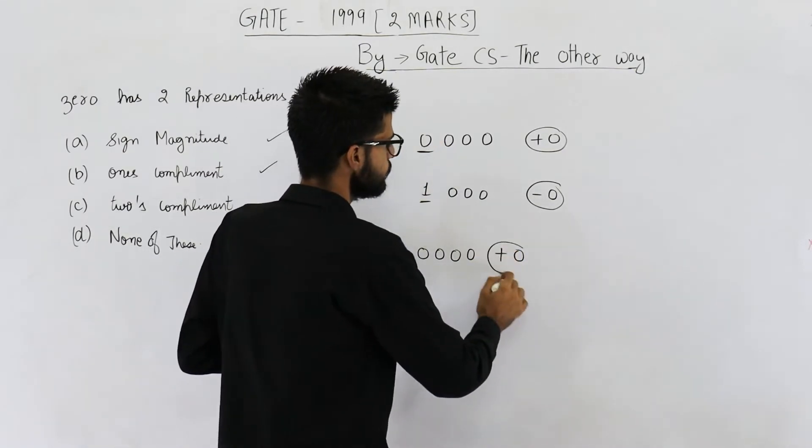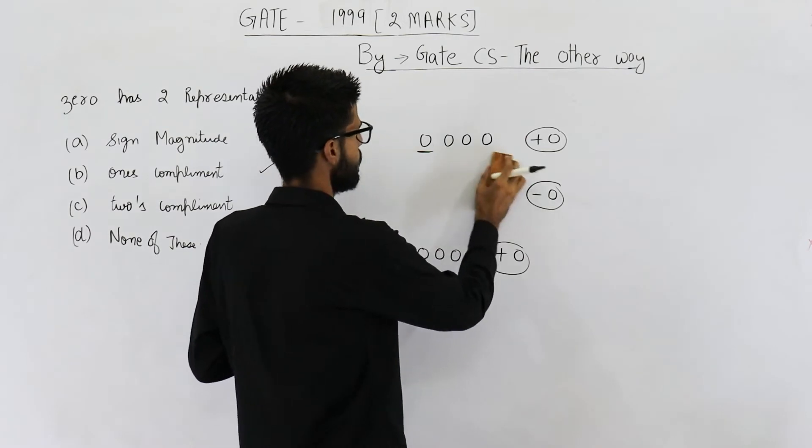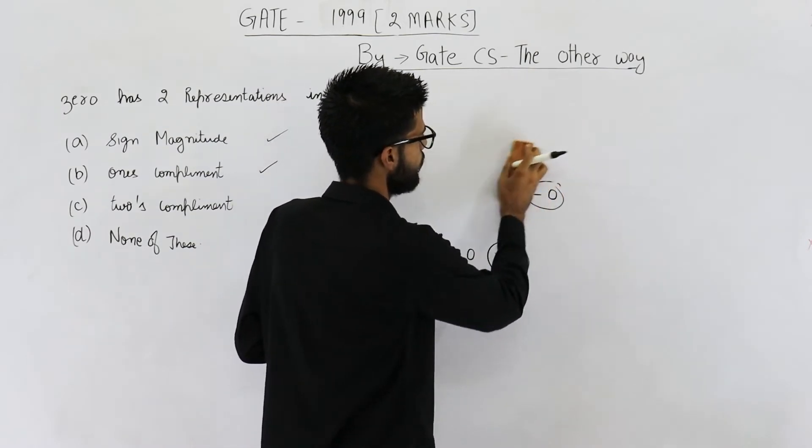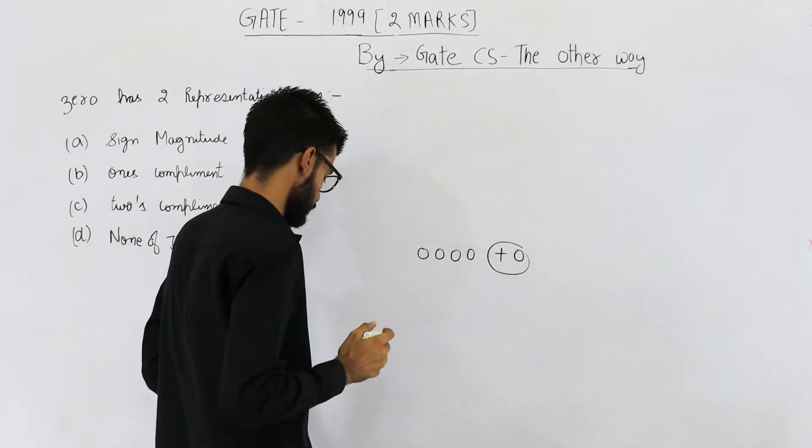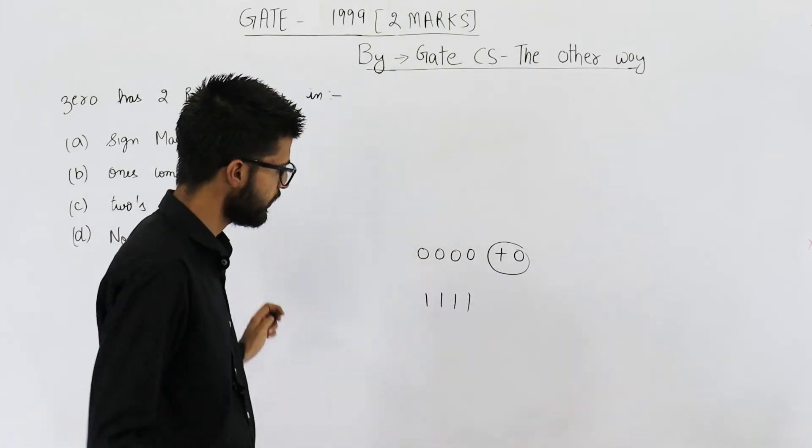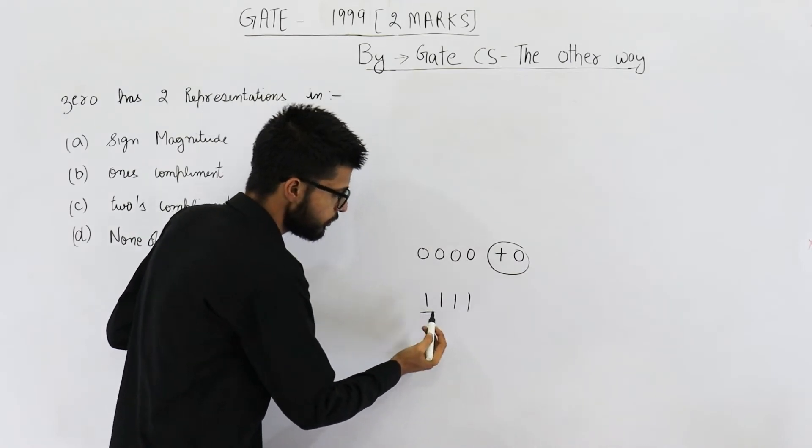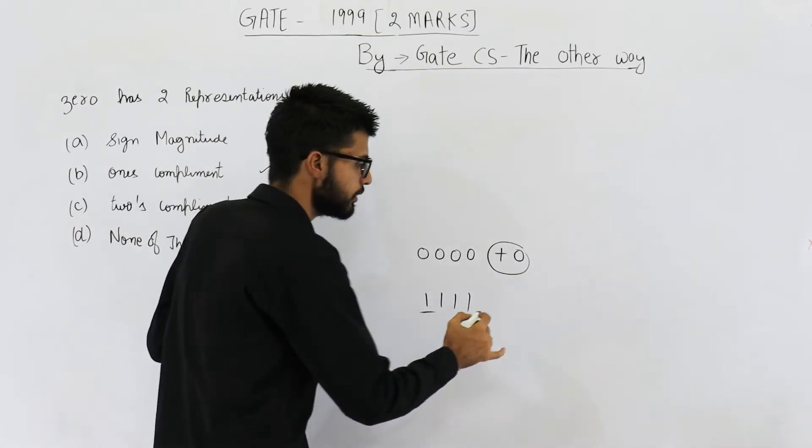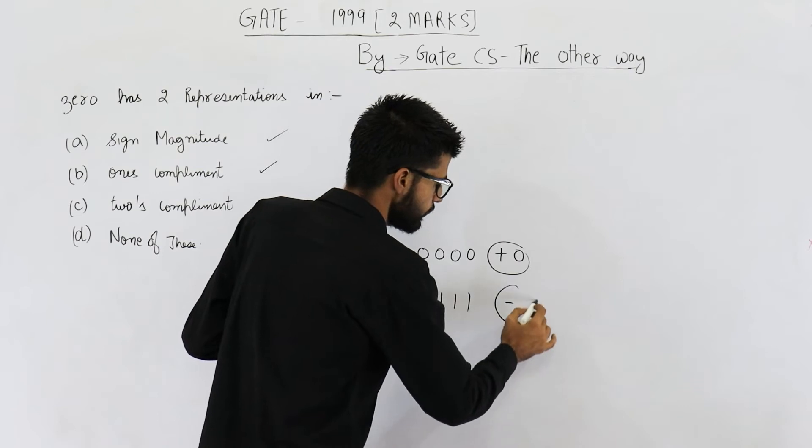And minus zero will be all ones. How is this one minus zero? First thing is sign bit is one. That means the number that it represents is going to be negative.